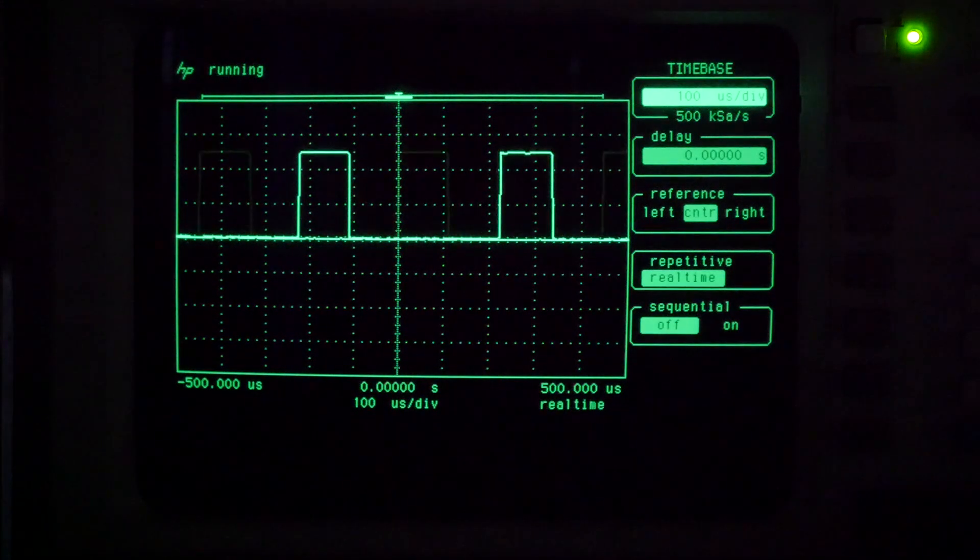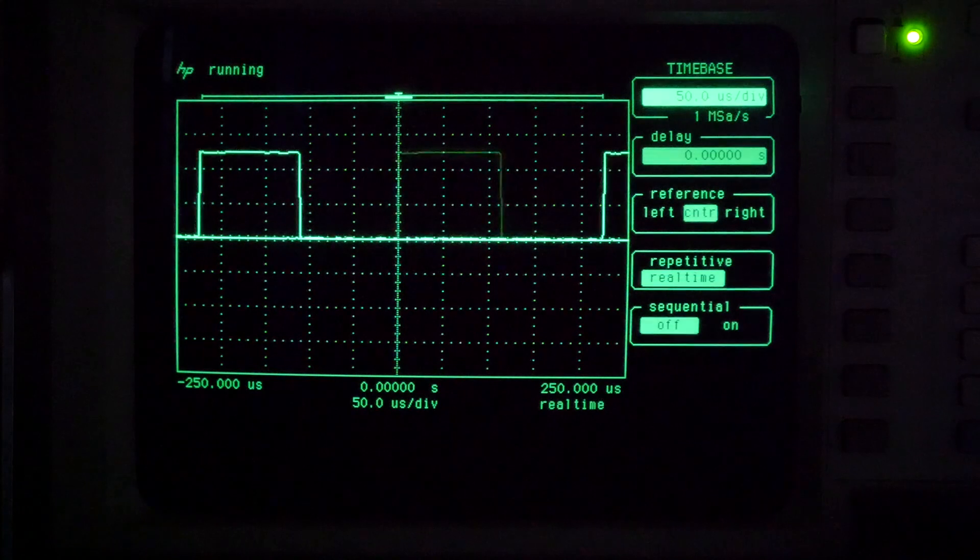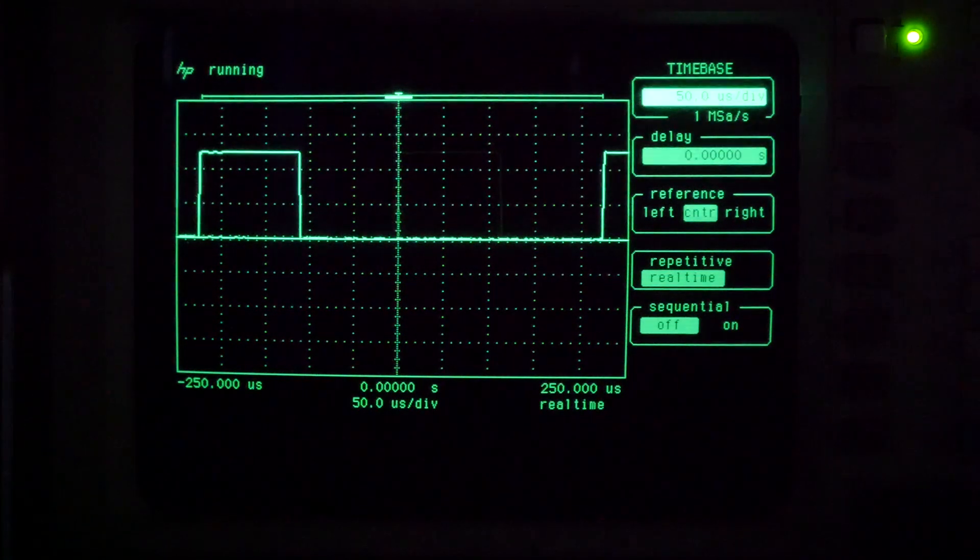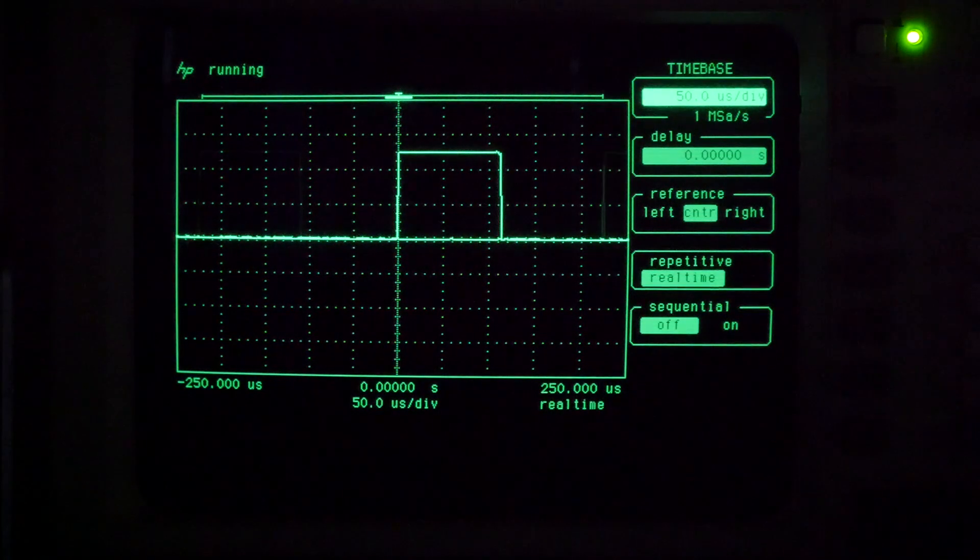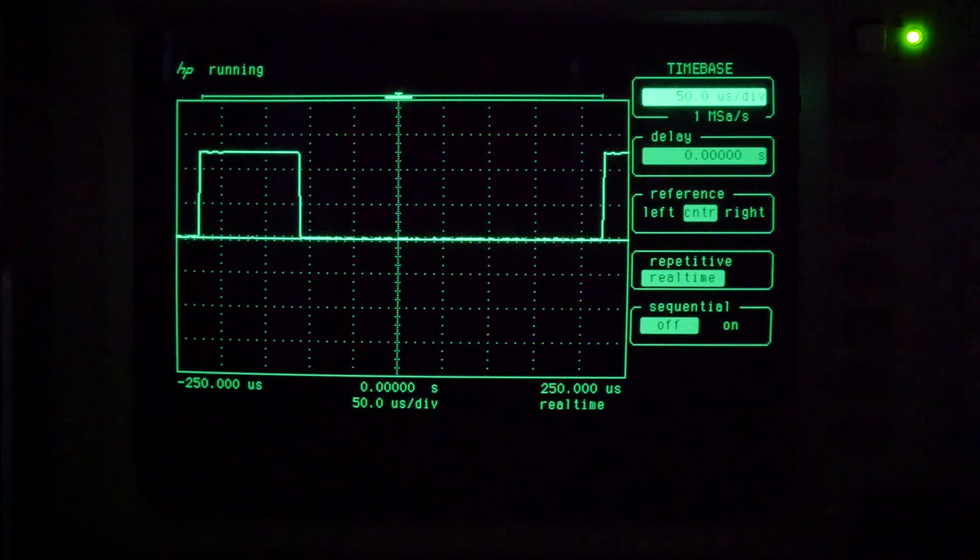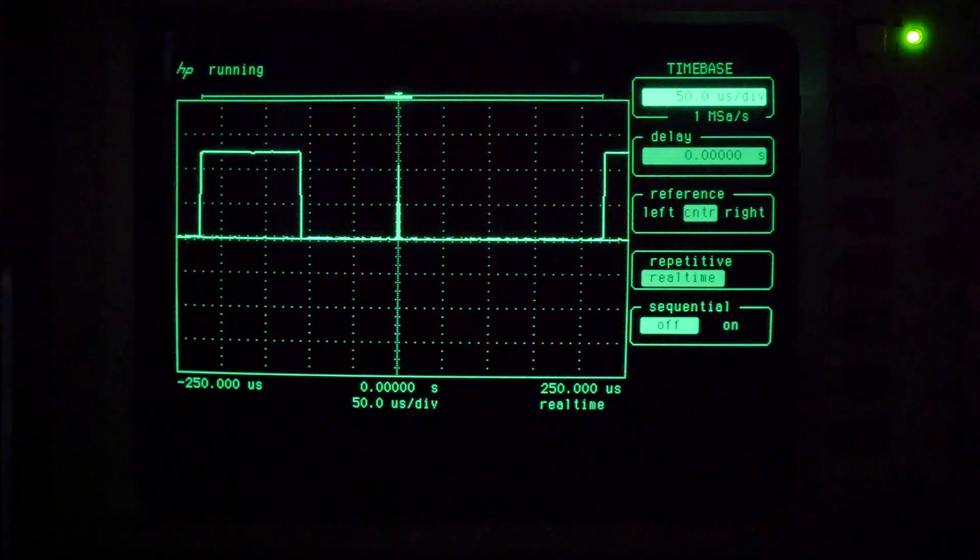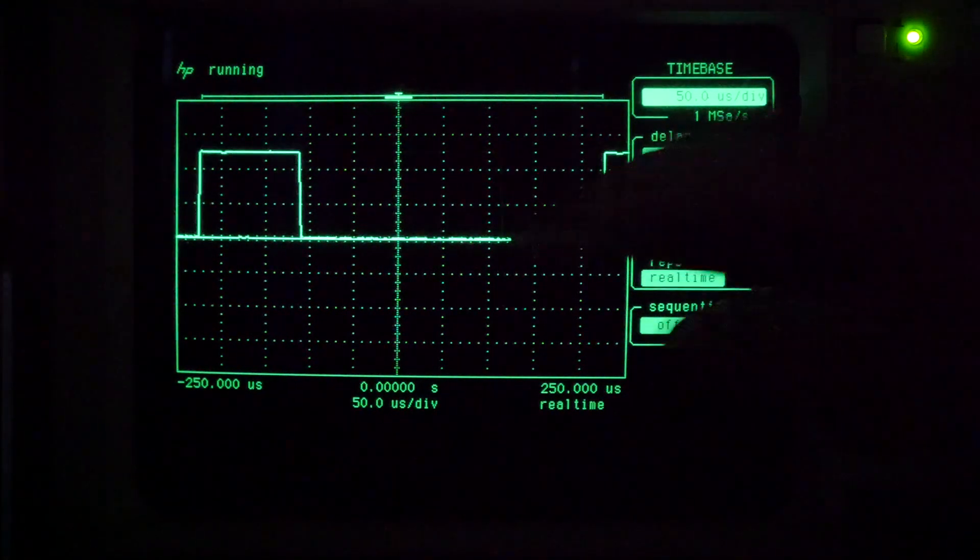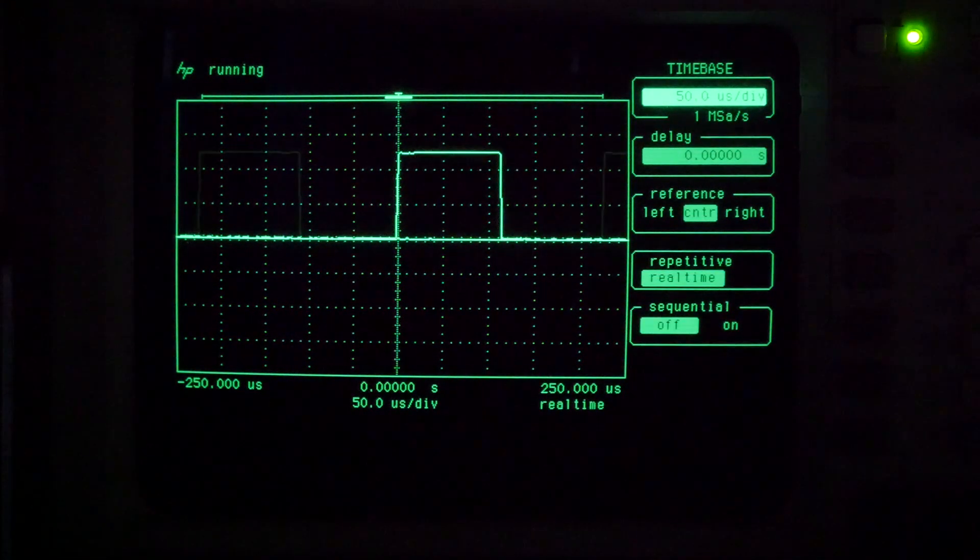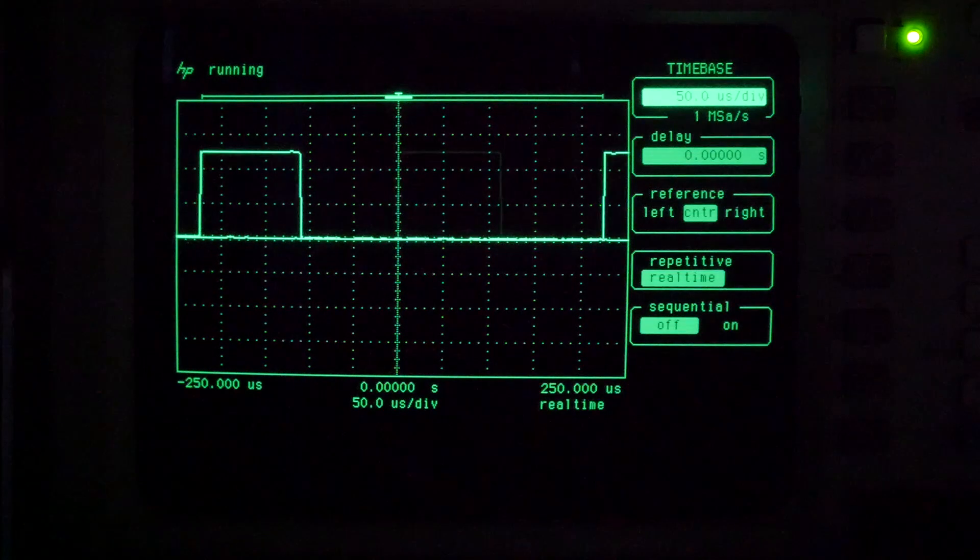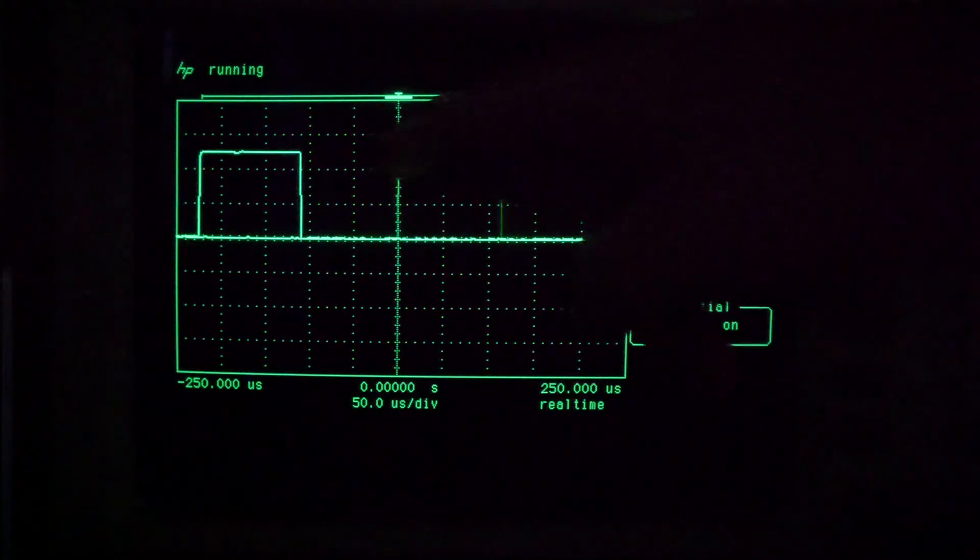If we shorten that time base we should make that a bit more obvious. Here we've halved the time base down to 50 microseconds per division and that makes it a little clearer. The glitches pop up more frequently and not always hidden. Unfortunately our trigger level is a little low so we're triggering on the glitch. Perhaps we can get that trigger level just high enough so that we only trigger on the actual desired waveform.